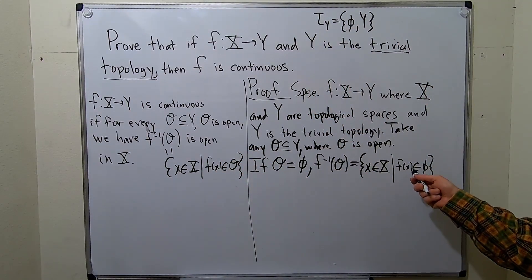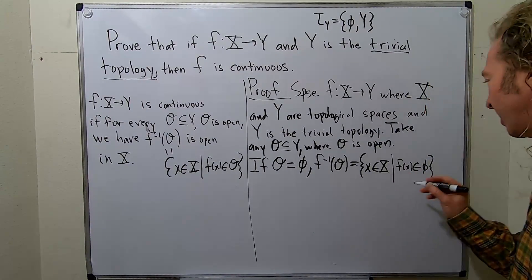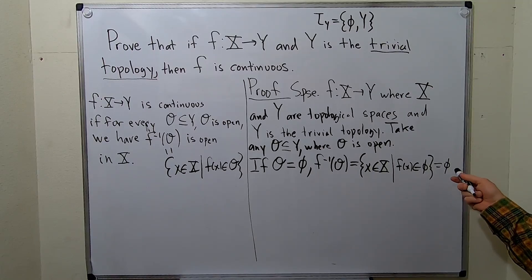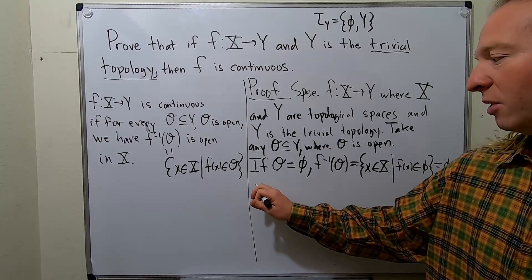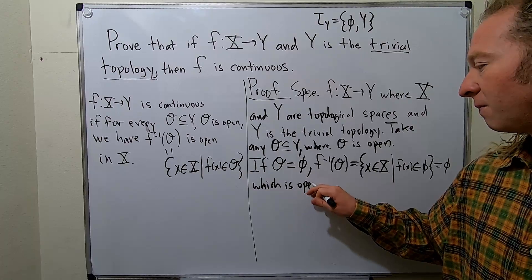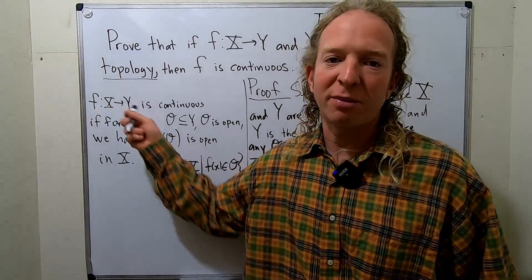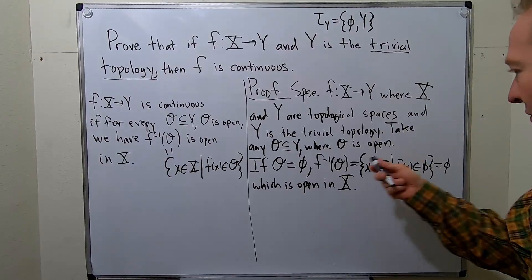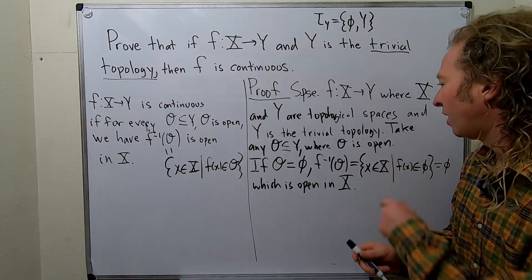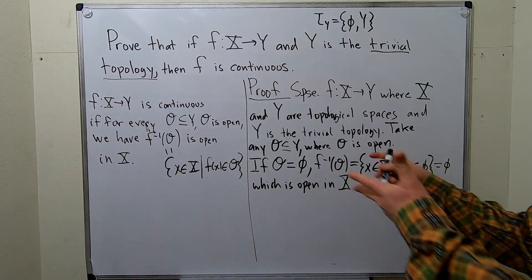In this case, the inverse image is going to be empty — it's impossible to have an element in the empty set. So the inverse image of O is the empty set, which is a subset of X, and the empty set is open in X. Because the empty set is always open in any topological space. So that takes care of that case.